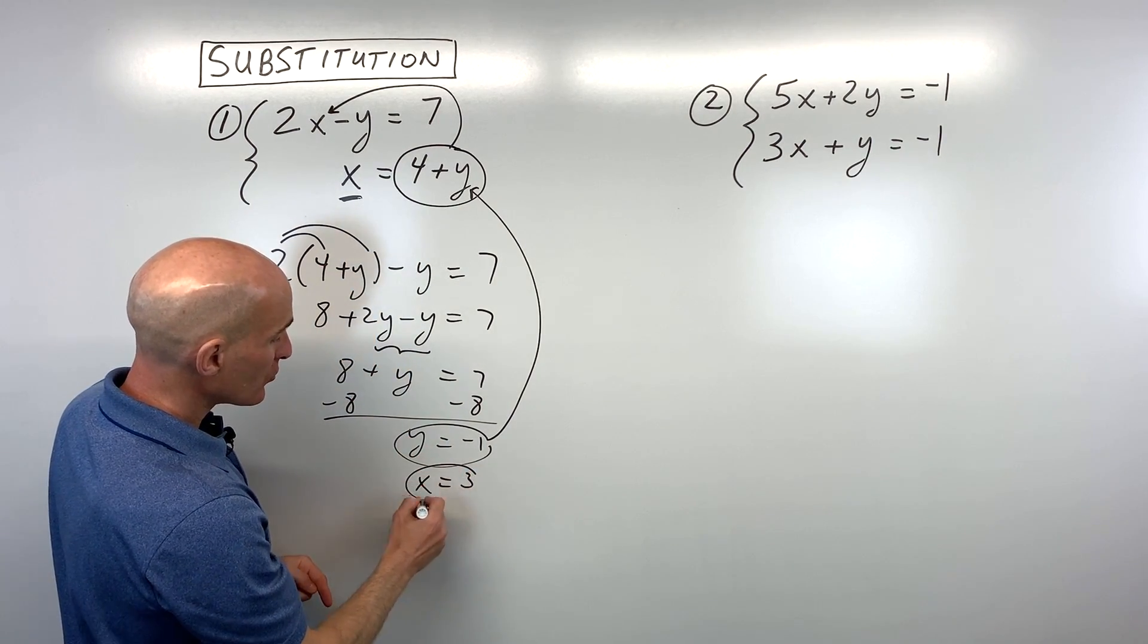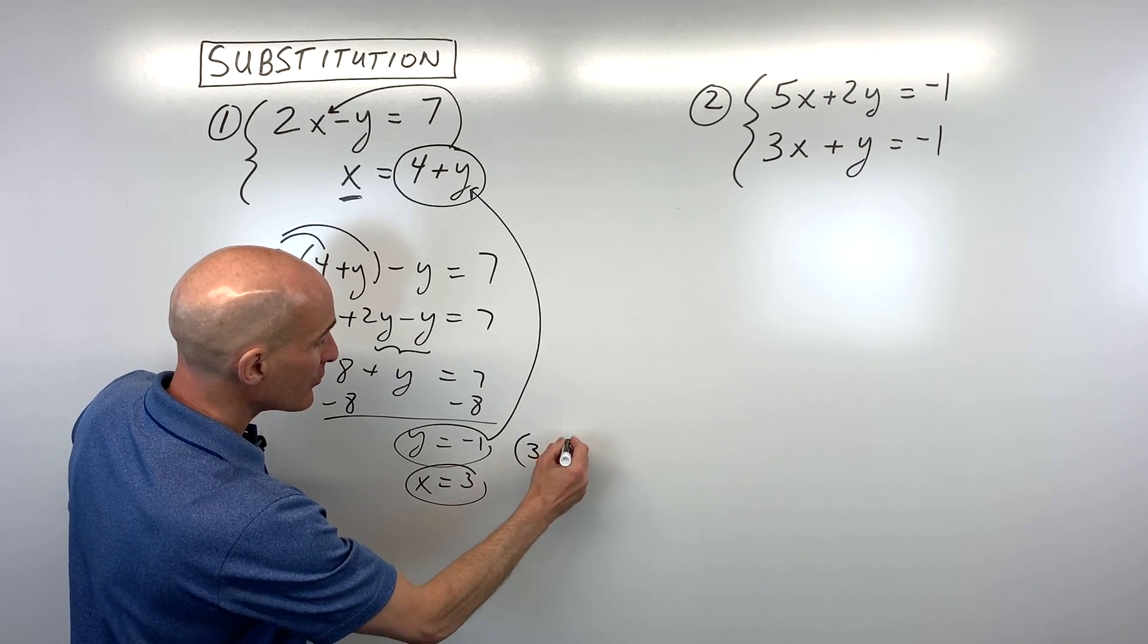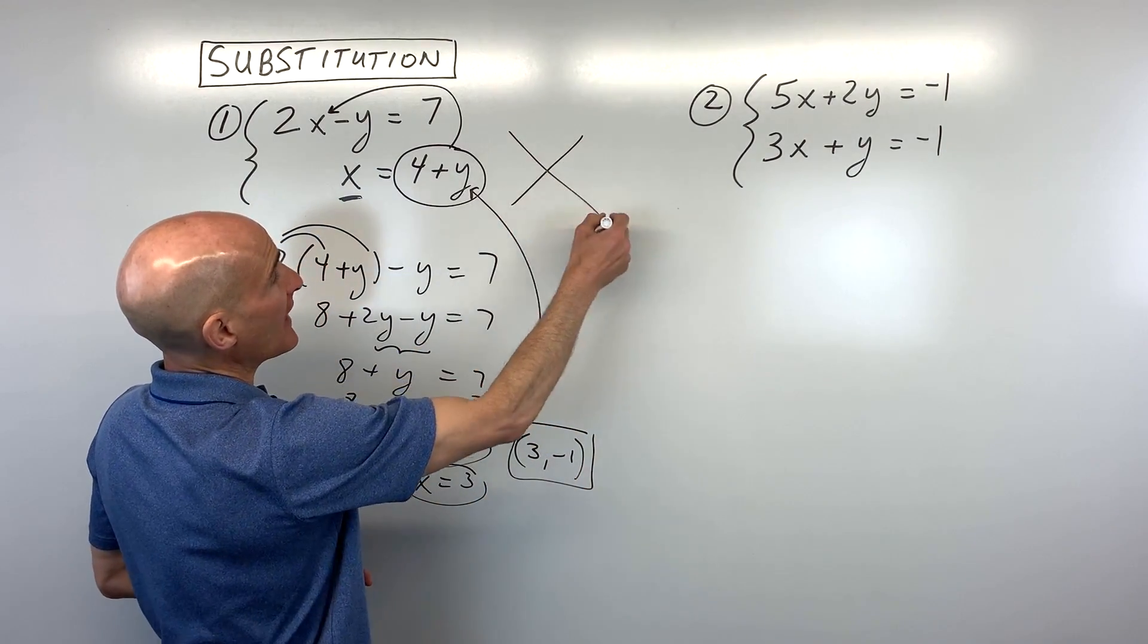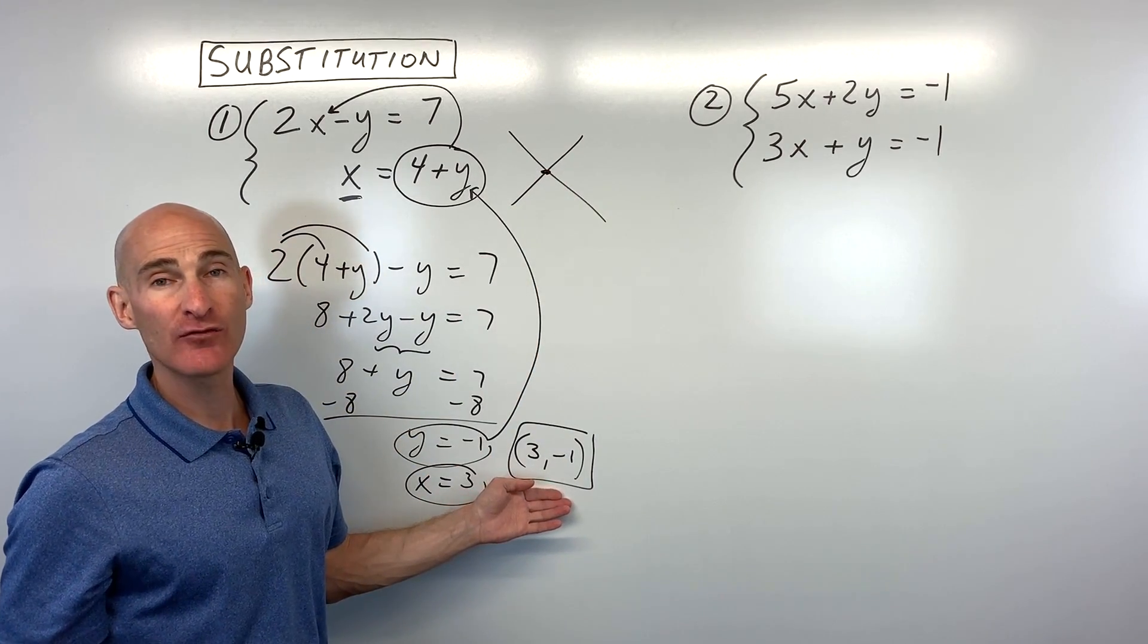So now we know x equals 3, and we can write this as a coordinate pair: 3 comma negative 1. This means if we were to graph these two lines, the point where they intersect is going to be (3, -1).